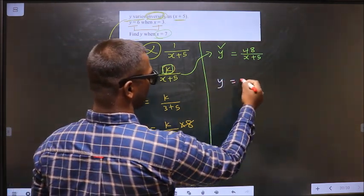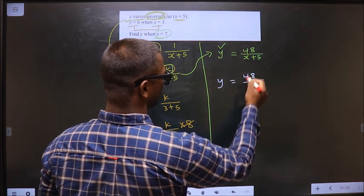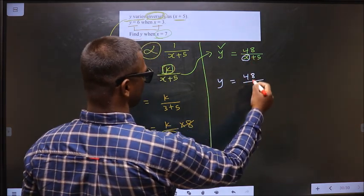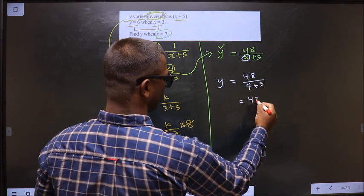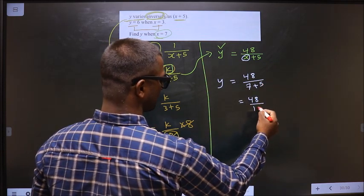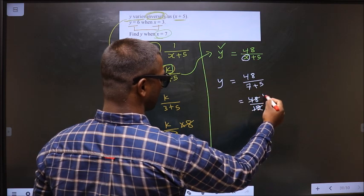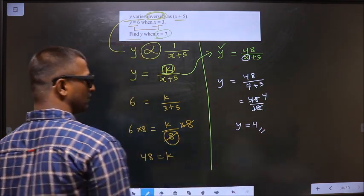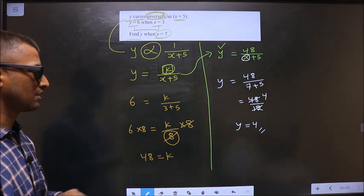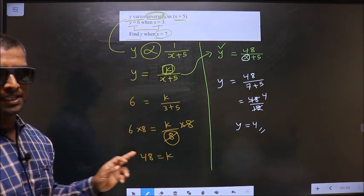So y equals 48 by, in place of x, 7. So 48 by 7 plus 5 is 12. 12 ones, 12 fours. So y equals 4 is our answer. Am I clear?